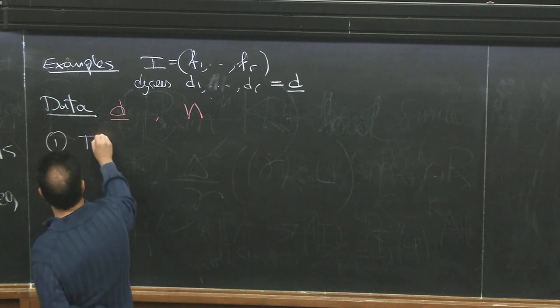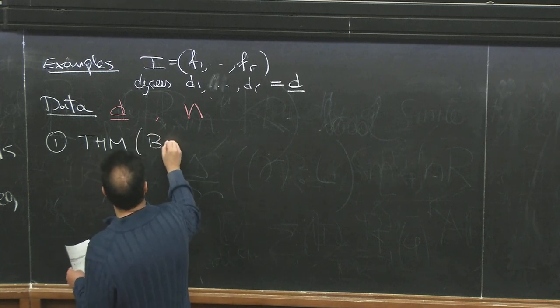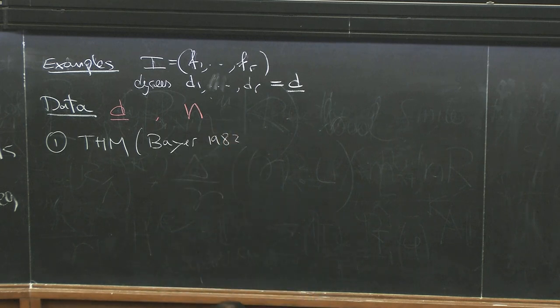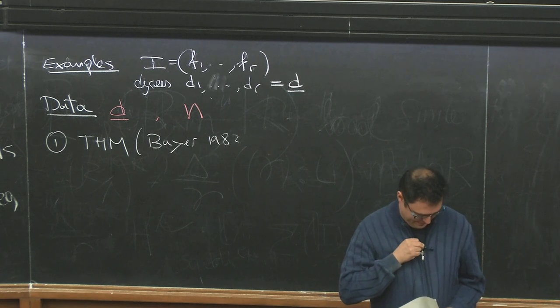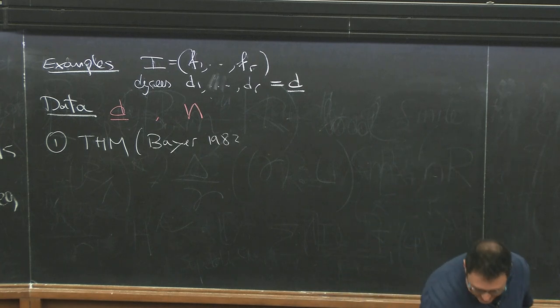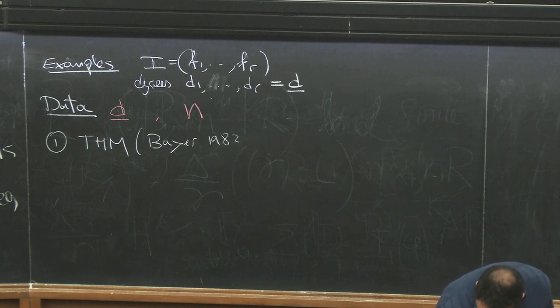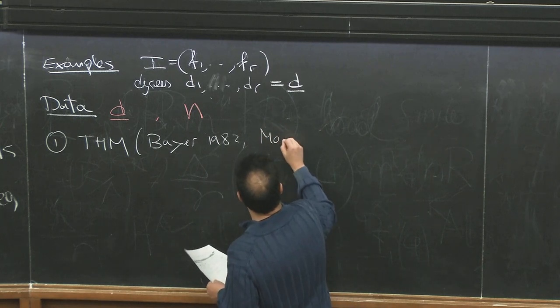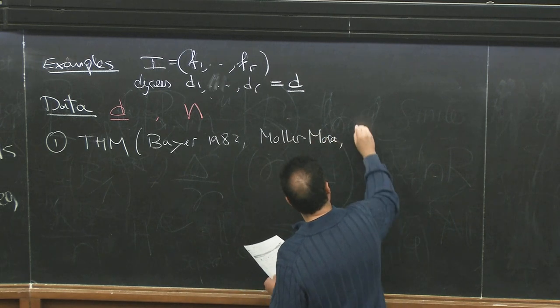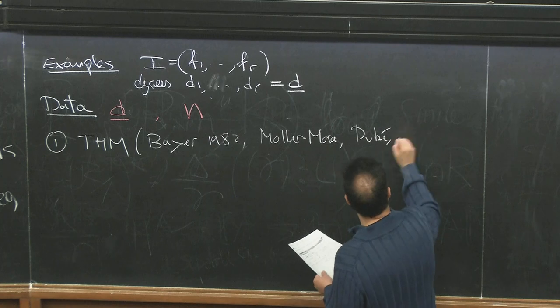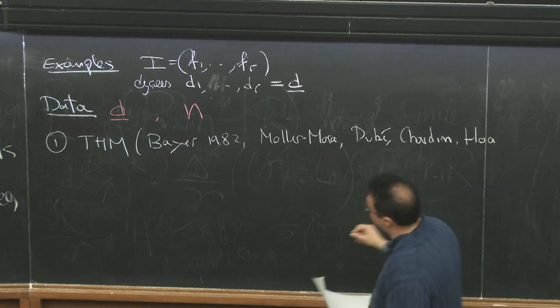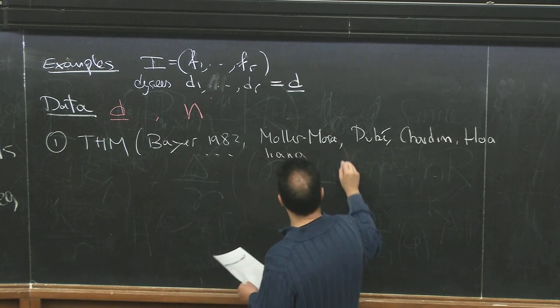and the number of variables of the ring N. With this type of data, the first result I want to mention is a theorem, some version of it in Bayer's thesis in 1982. Other people have worked on bounds on the size of Gröbner bases: Möller, Möller-Mora, Dubé, many people work on this type of topic. I want to mention also Mark Stadlan, Hoa, many other people including my student, one of my recent students, Liang.